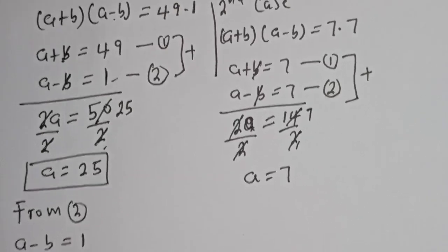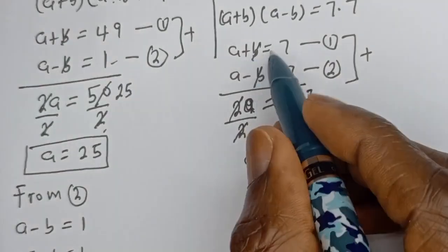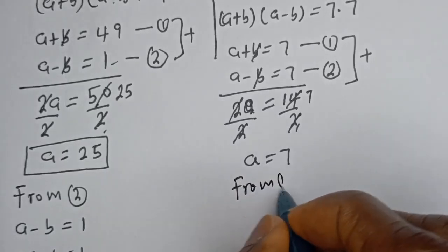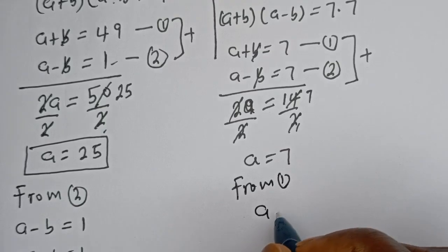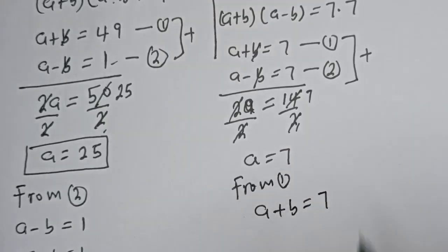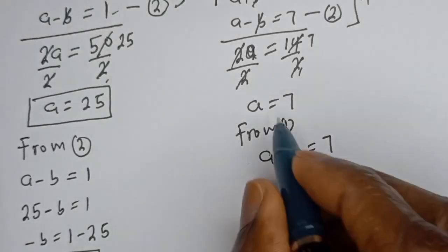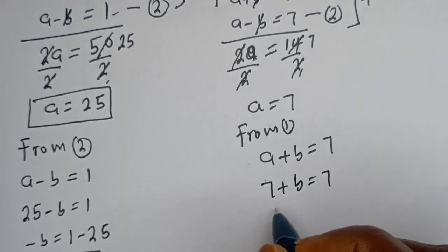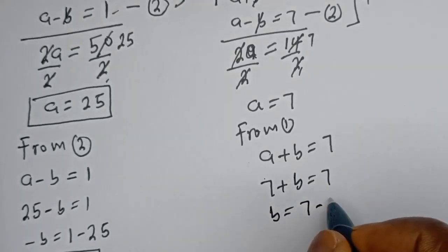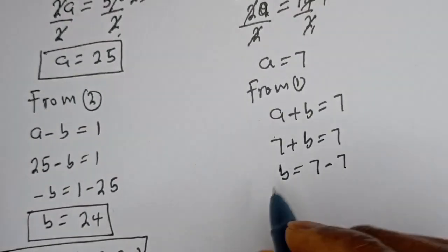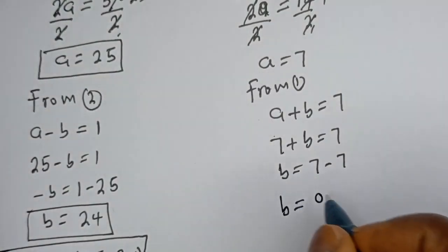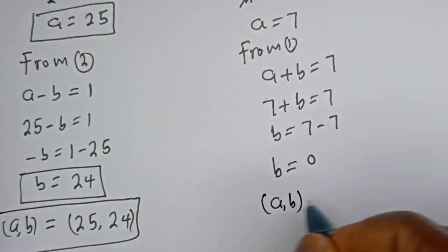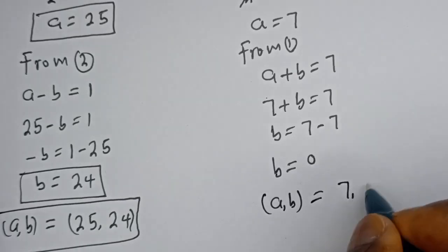Now we solve for B using equation 1: A plus B equals 7. When A equals 7, we get 7 plus B equals 7, so B equals 7 minus 7, which is 0. Therefore, in the second case, A equals 7 and B equals 0.